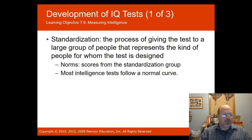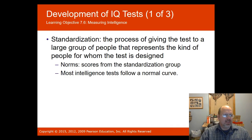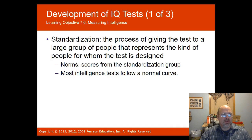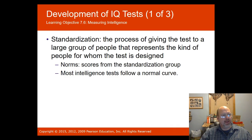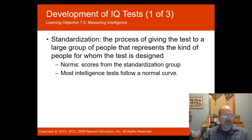Standardization is the process of giving the test to a large group of people under the same conditions that represents the kind of people for whom the test is designated. From that, we form norms — scores from the standardized groups. When you compare your scores to others you get a percentile rank. Note: percentile is not the same as percent. Percent means what portion of the test was correct; percentile means your score was better than a certain percentage of others your age.